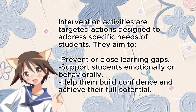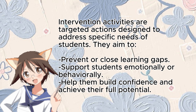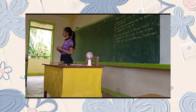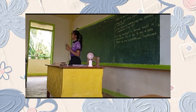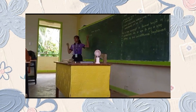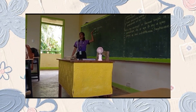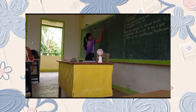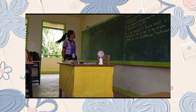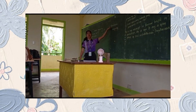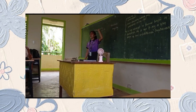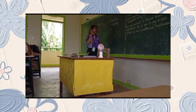They aim to prevent or close learning gaps, support students emotionally or behaviorally, and help them build confidence and achieve their full potential. The first thing I do is list the intervention strategies I will do. So first, tutoring — one-on-one sessions to focus on specific skills. Next is small group instruction, where students with similar challenges work together. Next is individualized instruction — personalized lessons for unique needs, and many more.